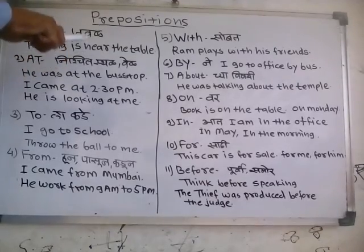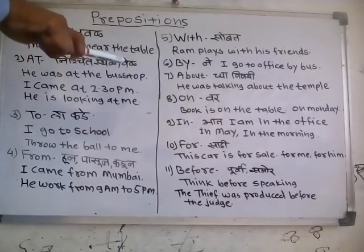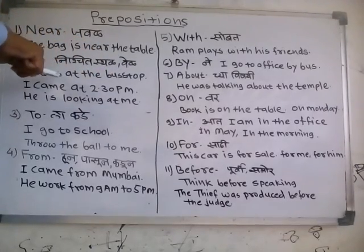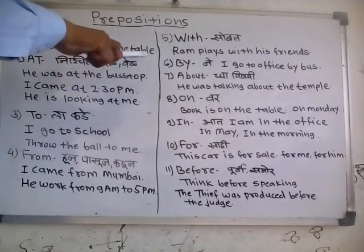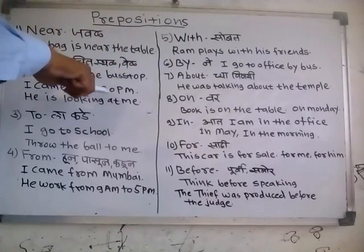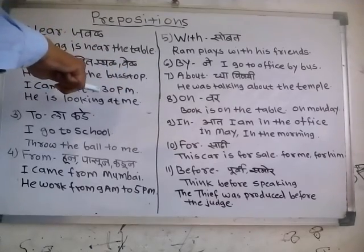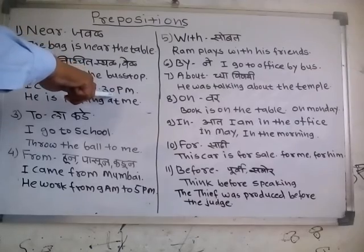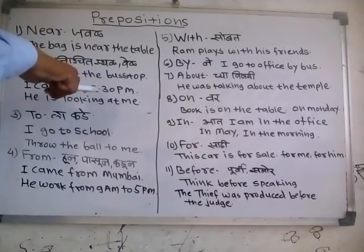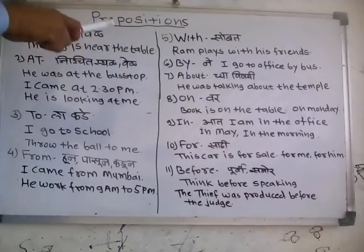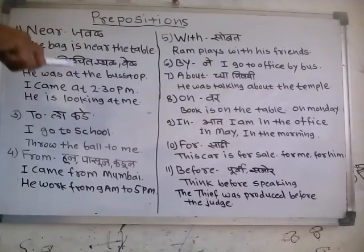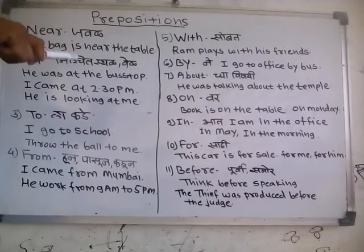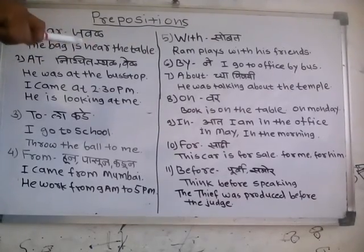Next is 'at'. We use 'at' to show a particular situation, a particular place, as well as a particular time. For example: He was at the bus stop — showing a particular place. I came at 2:30 p.m. — showing a particular time. You can use 'at' before time expressions: at 1 p.m., at 12:30 p.m., at 4:15 p.m.